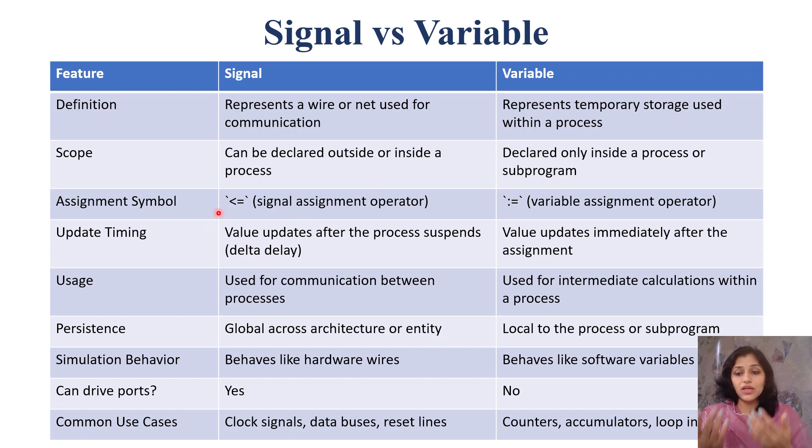Assignment: when we are assigning some value, then x is assigned as suppose 1, 2, or 3 in case of integers. Assignment operator is this less than and equals to symbol. Whereas for variable, assignment operator is colon and equals to. You need to remember this is very important difference. Otherwise, you will get error while writing the VHDL code. If your data object is signal, assignment operator is this, else assignment operator is this.